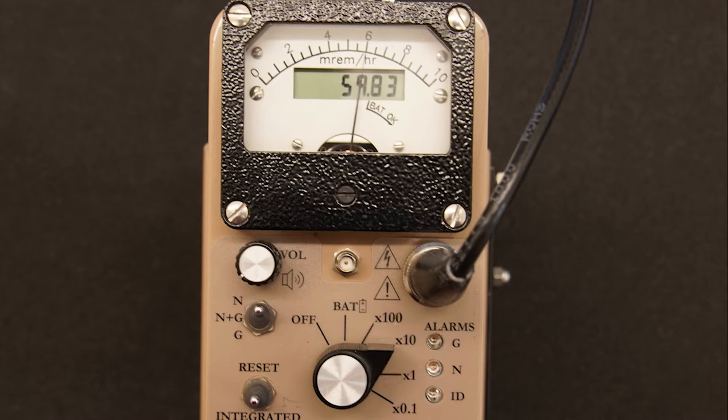In this example, the range switch is on the times 10 setting and the meter is indicating 6. So, the actual reading is 6 multiplied by 10, which equals 60 mrem per hour.